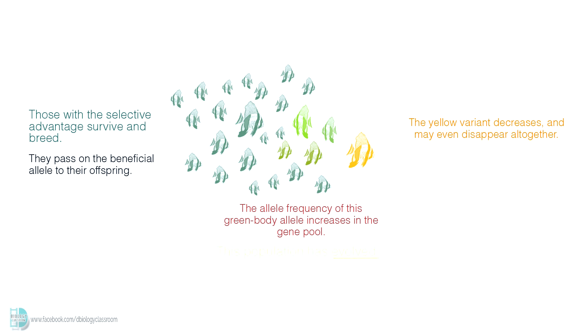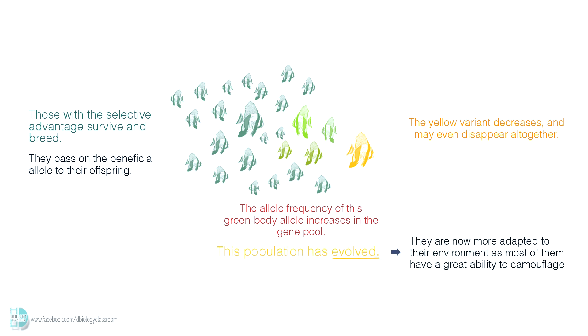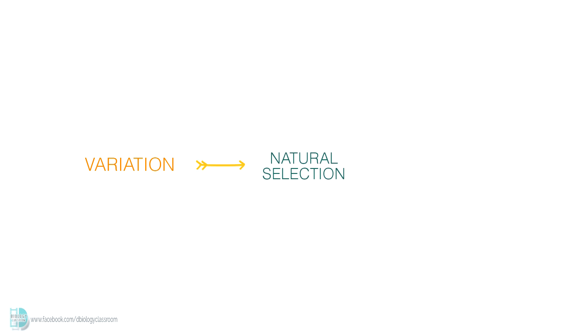This population has evolved. They are now more adapted to their environment as most of them have a great ability to camouflage. This is how variation leads to natural selection and causes the evolution of a population.